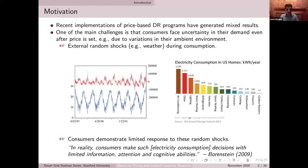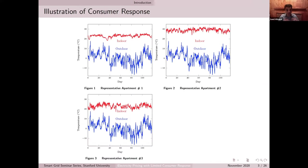For this talk, I mainly focus on temperature and air conditioning, but it can be extended to other settings as well. The idea here is to incorporate informational and cognitive limitations of consumers and see how it can be incorporated into having a better understanding of the consumption patterns faced by utility firms.